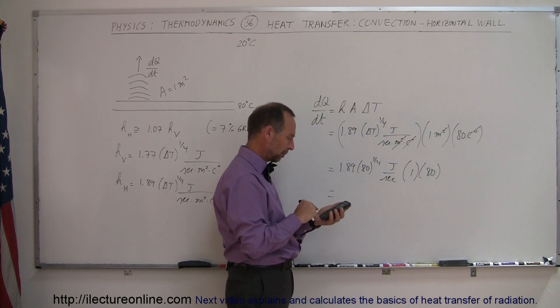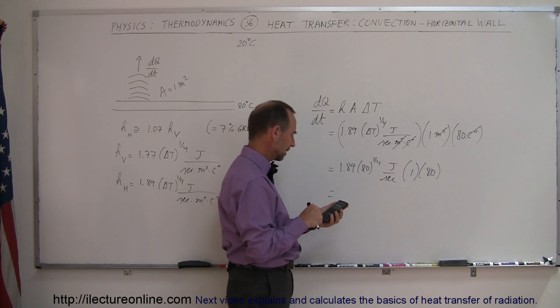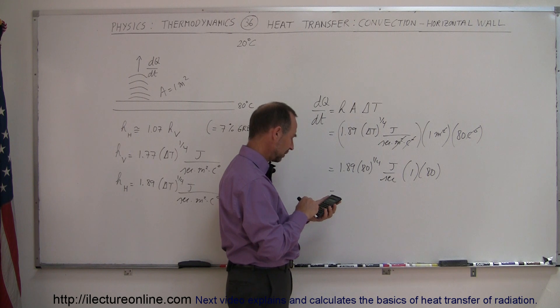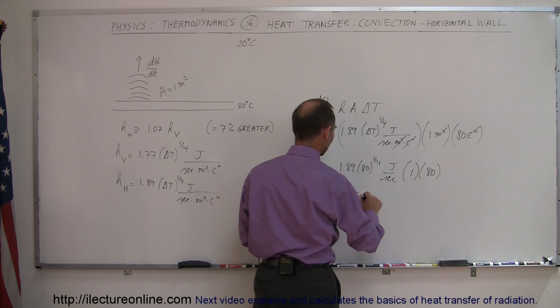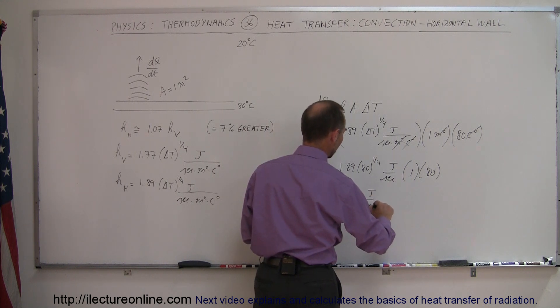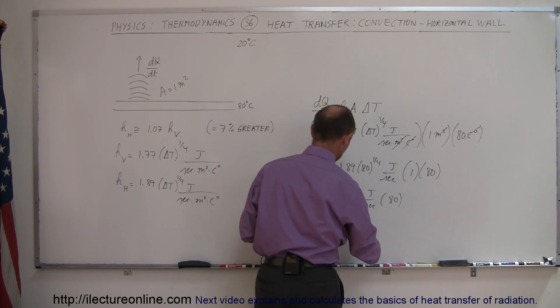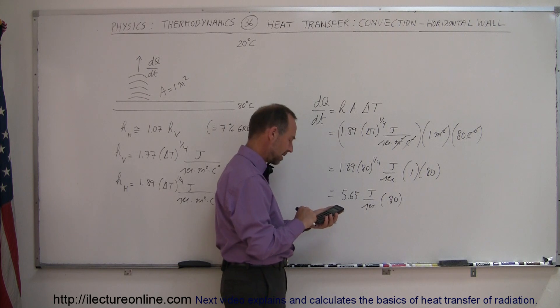Okay, so what's 80 to the one-quarter power? So that means we take the square root and we take the square root again. That's 2.99, right? Multiply that times 1.89. And so we get 5.65 joules per second. Multiply that times 80. And so times 80 equals...